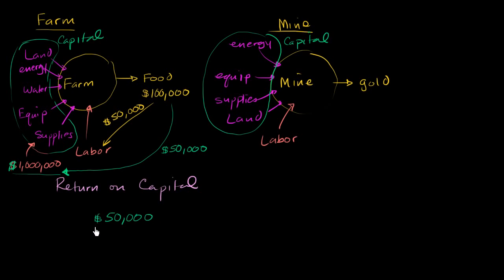So your return on capital is going to be fifty thousand dollars. That's what the owner of the capital gets, and it's the return on their investment of one million dollars. And this is going to be the same thing as five divided by a hundred, or it would be five percent. You have a five percent return on capital. You invest a million dollars, you're going to get fifty thousand dollars. If it was a six percent return on capital, you invest a million dollars, you get sixty thousand dollars.